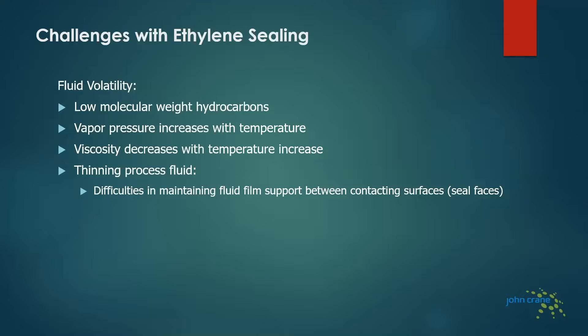When we look at ethylene applications and sealing ethylene with mechanical seals, it's a very challenging service, largely due to the fluid volatility. With ethylene, we're dealing with low molecular weight hydrocarbons, vapor pressures that increase with temperature, decreases in viscosity also with temperature increases, and this leads to a very thinning fluid film.